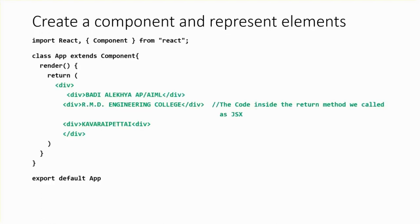So how to create a component and represent elements under React.js — you have to import React. The first statement for creating a component uses import React, and within flower braces you have to create a Component, where the C should be capitalized. Then whatever class name you have given when creating the project, inside our project the app class is there, which you have to extend by our Component.